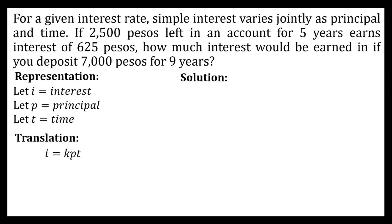For our solution, since we're given our first set of interest, principal, and time, we can use that to get the constant of variation. Using the equation I = KPT, we substitute: 625 pesos is equal to the constant of variation times the principal of 2500 pesos times five years.